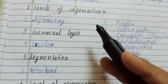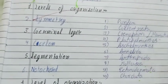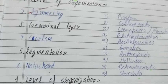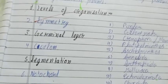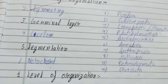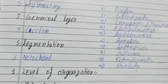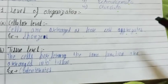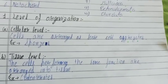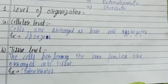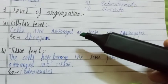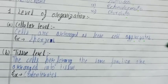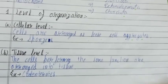According to level of organization, animals are divided into four types: cellular level, tissue level, organ level, or organ system level, based on which structure the animal is made of. First is cellular level. If cells are arranged as loose cell aggregates and then an organism is formed, it is known as cellular level.